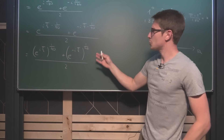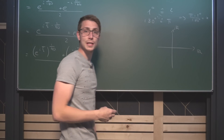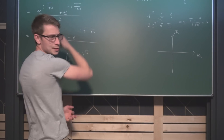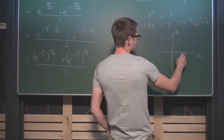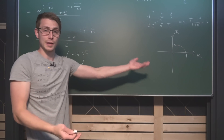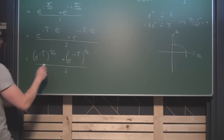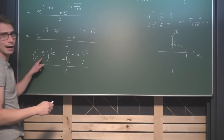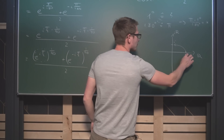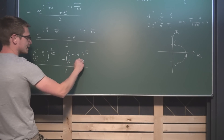Why did we do this? Because e to the iπ over 2 is something we are really familiar with. Going 90 degrees counterclockwise on the complex plane, we land at i. So this expression is nothing other than i. And if we go negative π over 2 — clockwise — we land at negative i. So that part is nothing other than negative i.